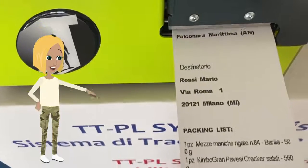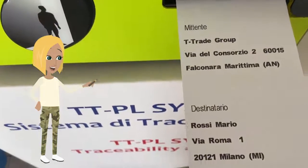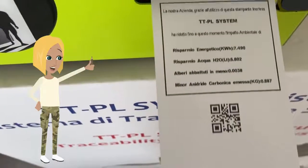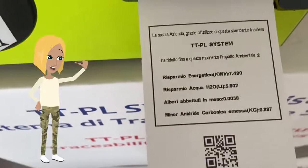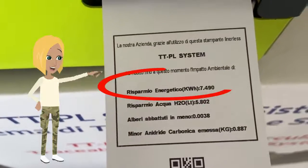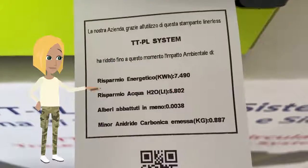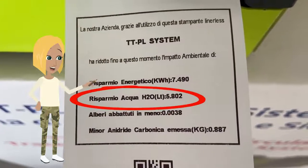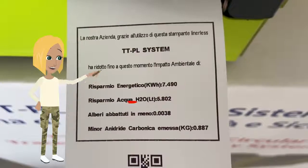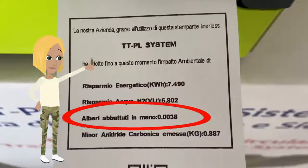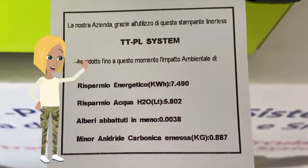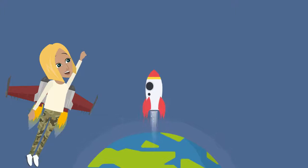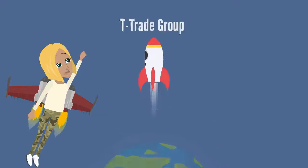Thanks to the 50% reduction in paper use that the linerless technology allows me to obtain, I can track how much less energy I consume, how much less water was needed in production, how many fewer trees have been felled, and how much less CO2 has been emitted into the atmosphere. Have a good trip to the future with TTrade Group.